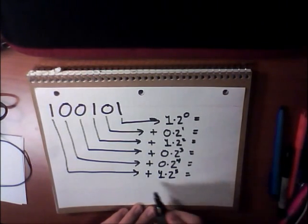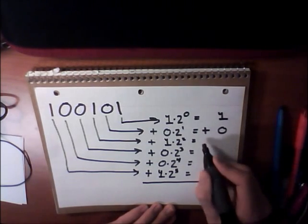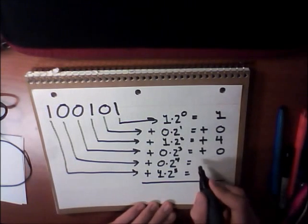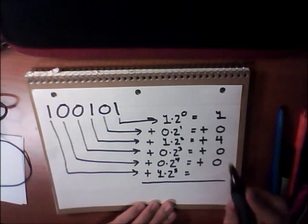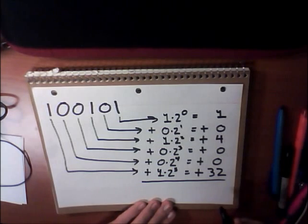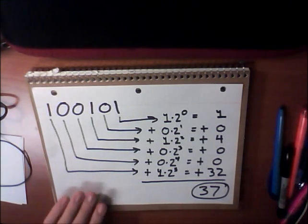We can elaborate on this further. 1 plus 0, plus 4, plus 0, plus 0, plus 32. When we add this all together, we get 37.